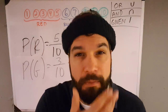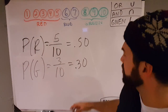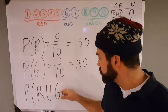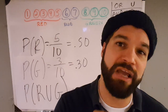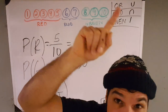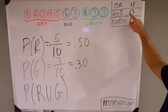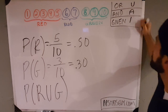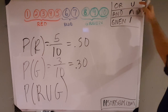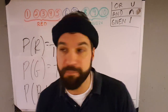So the probability it's red is 50%, the probability it's green is 30%. But what if I want to know what's the probability it's red or green? We have some symbols we use in probability. 'Or' is a U — that actually stands for union. 'And' is like an upside-down U. And there's also 'given.' We're going to talk about those symbols: or, and, and given.